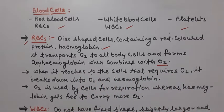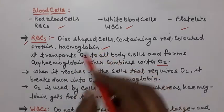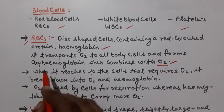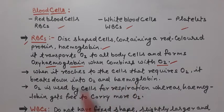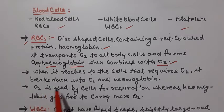So, how do we transport it? Hemoglobin, when it combines with oxygen, forms oxyhemoglobin. And when it reaches the cells, it breaks down into oxygen and hemoglobin.